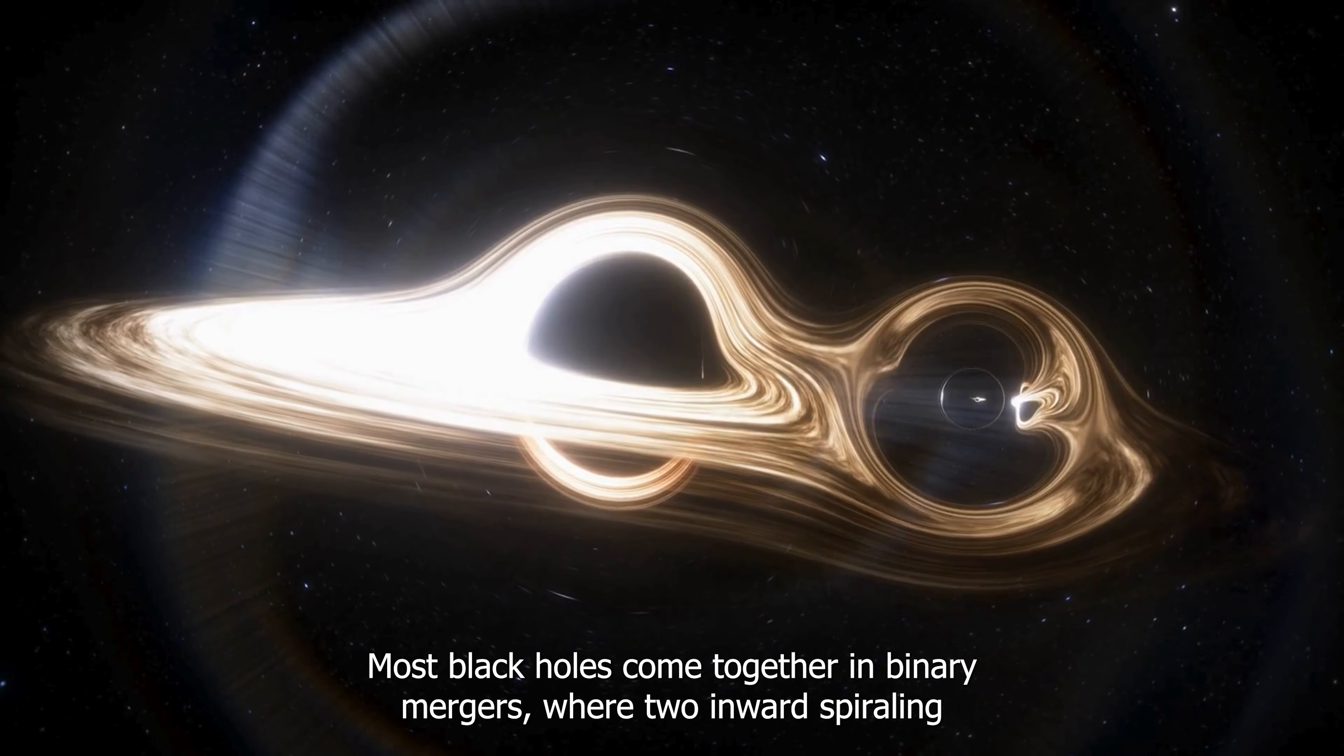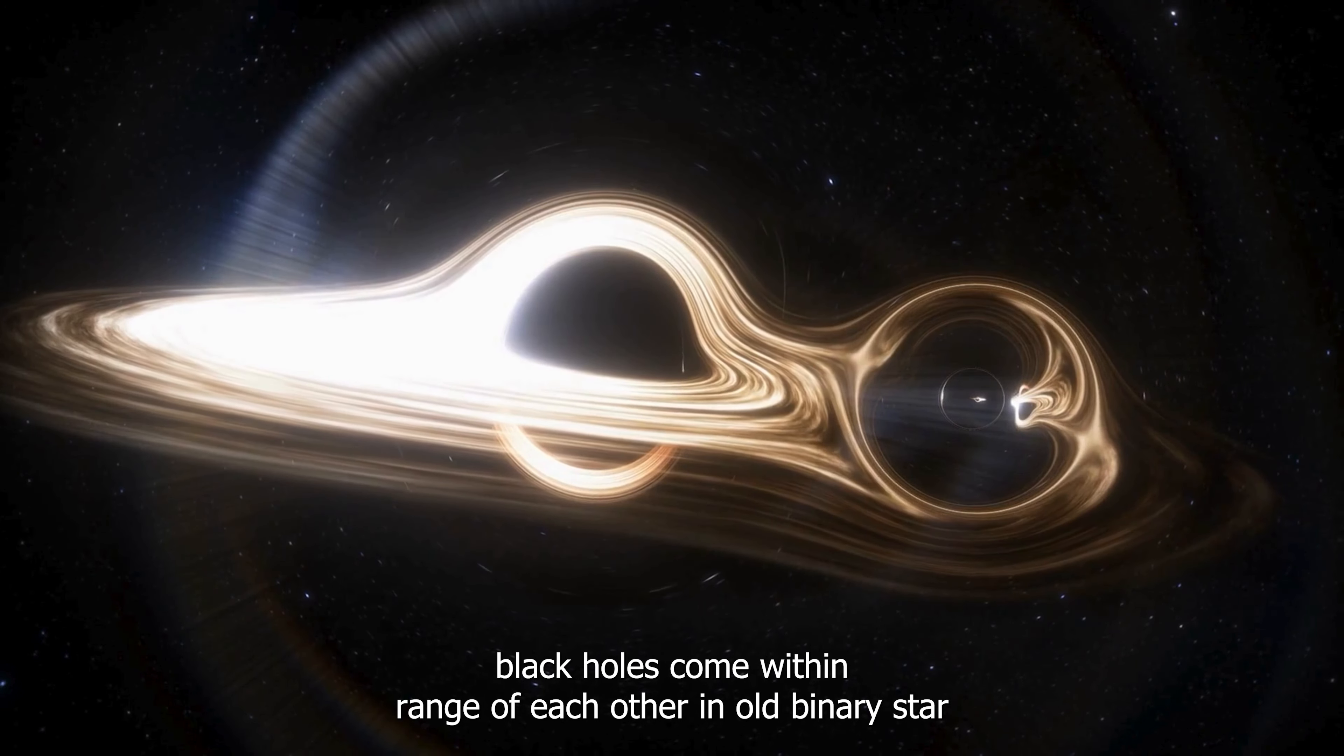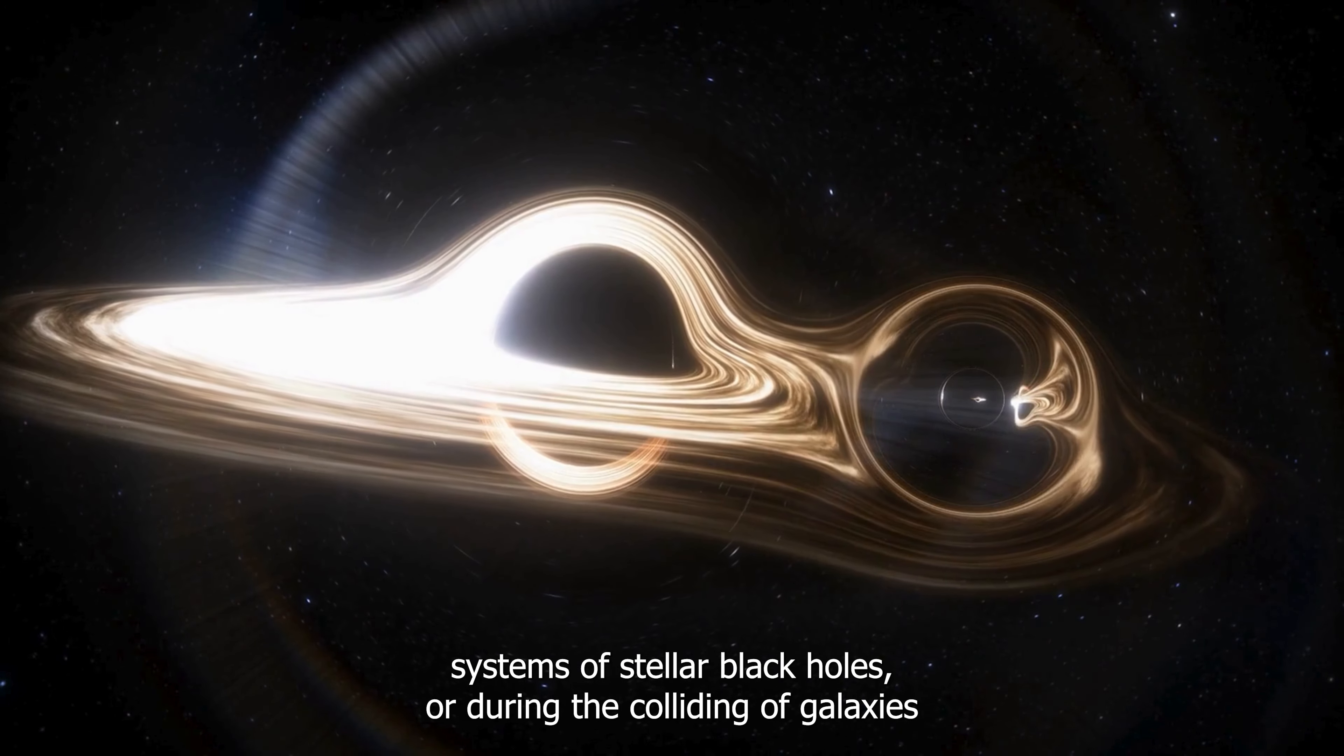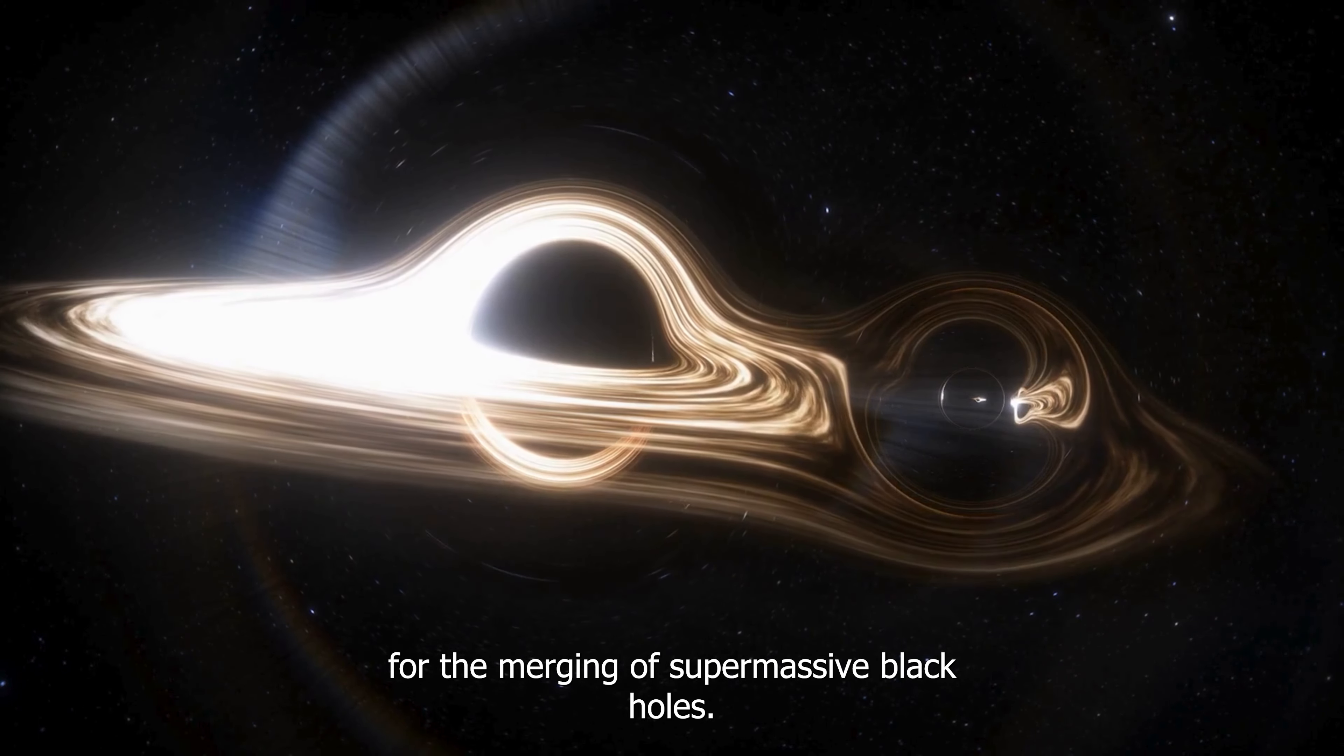Most black holes come together in binary mergers where two inward spiraling black holes come within range of each other in old binary star systems of stellar black holes or during the colliding of galaxies for the merging of supermassive black holes.